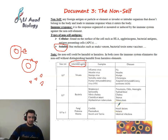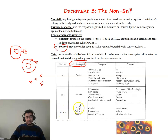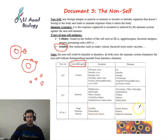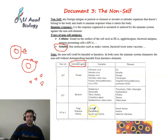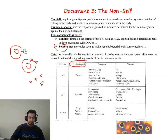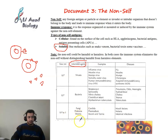Fungi are around 10 to the power of minus 2 to 1 meters, such as Candida, which causes mouth lesions. Protozoa include Plasmodium falciparum, which causes malaria - note it's not a bacterium.